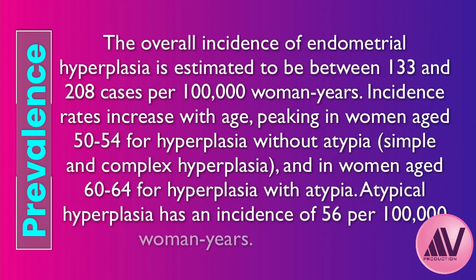The overall incidence is somewhere between 133 and 208 cases per 100,000 woman-years. Hyperplasia without atypia tends to peak in women aged 50 to 54, while hyperplasia with atypia peaks later, around 60 to 64. Specific rates: simple hyperplasia is around 142 per 100,000 woman-years, complex is higher at 213, and atypical hyperplasia is lower at about 56 per 100,000.